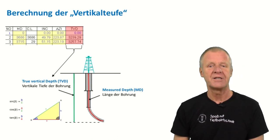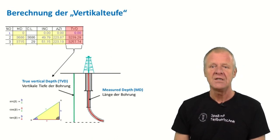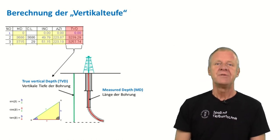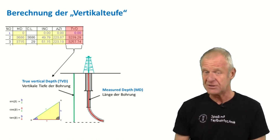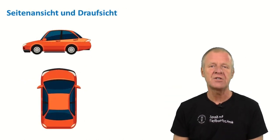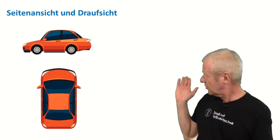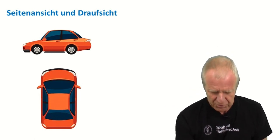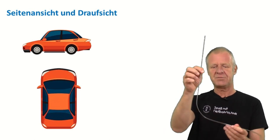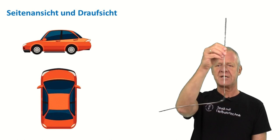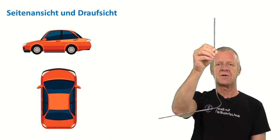So now we want to find out how the well path actually looks like. If we look at the top view and the side view of a car, then you can already imagine pretty clearly how the car will look in 3D. For a borehole, that's in principle exactly the same. As you can see, this borehole looks different from various sides, depending on which perspective you look at it.